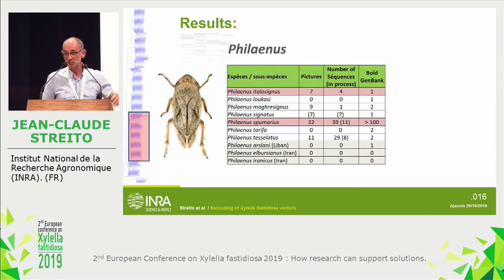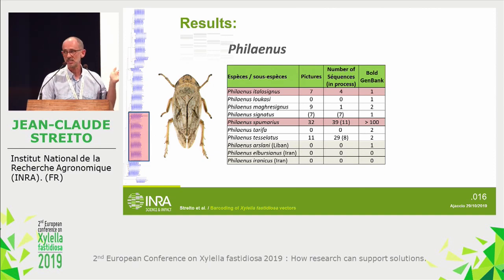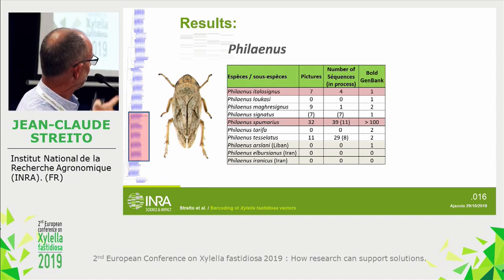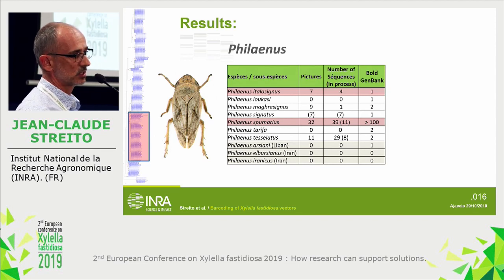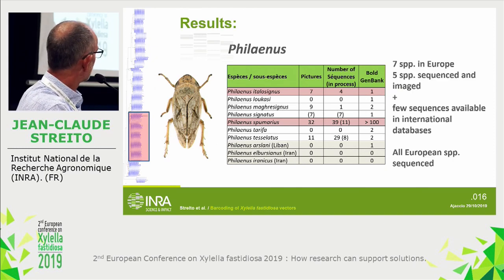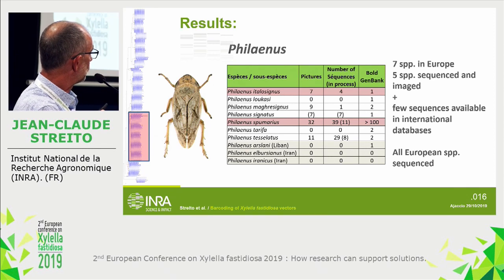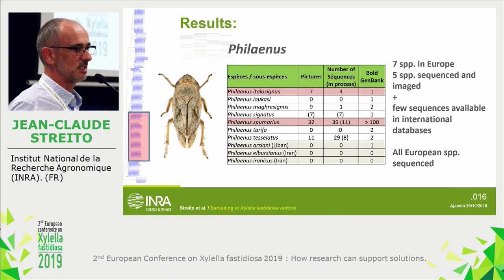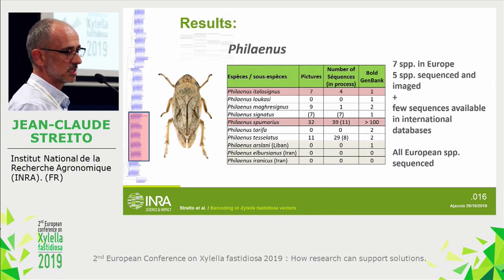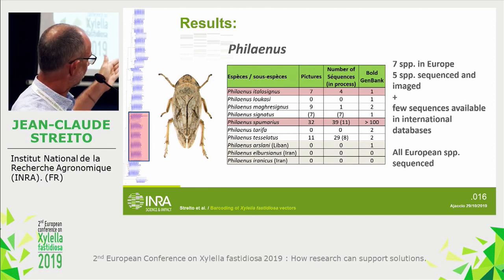For the most important genus — Philaenus, which includes Philaenus pumarius, the main vector in Italy, and also Philaenus italosignus — we succeeded in sequencing 5 of the 7 species present in Europe, which is a good performance. We also have some good quality, correctly identified sequences in international databases, which is not usually the case — so we are happy with this genus. All European species have been sequenced.